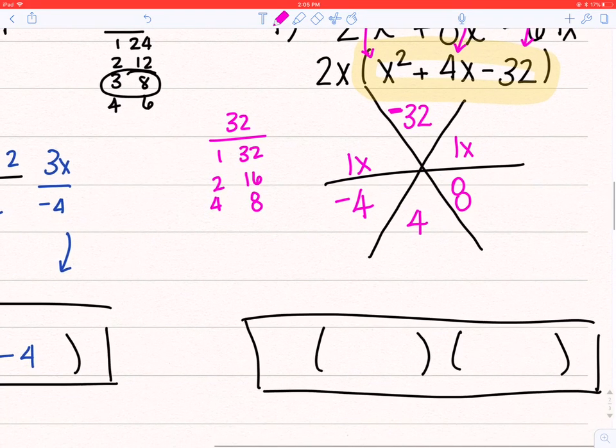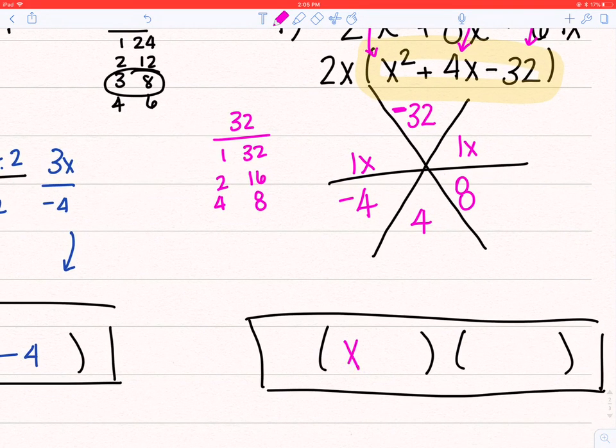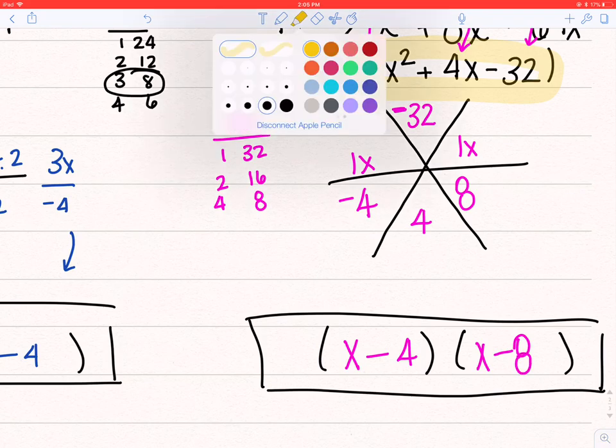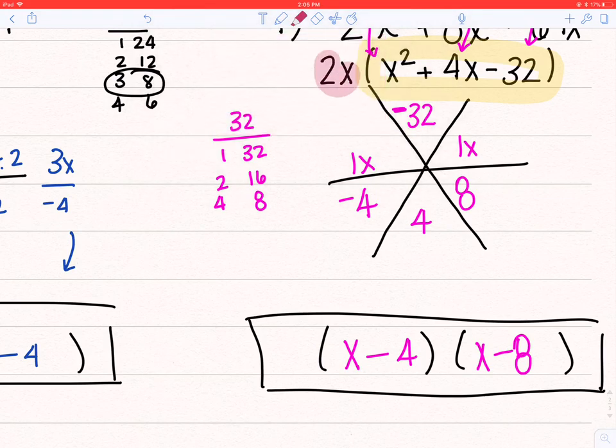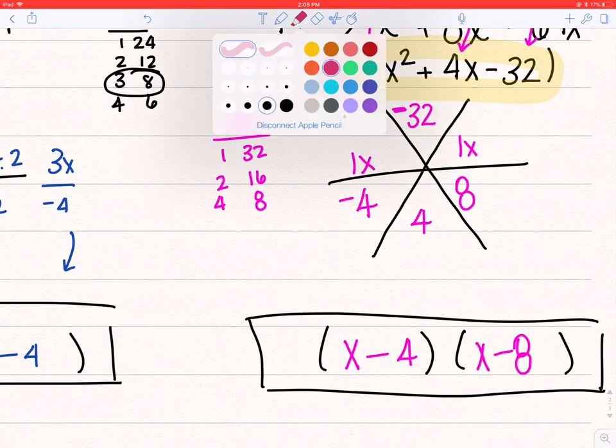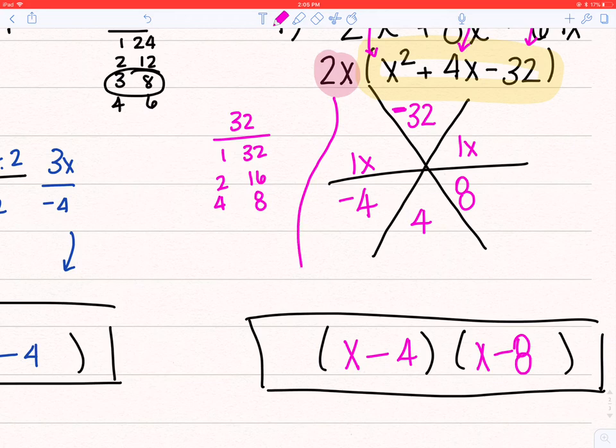1x and negative 4 doesn't reduce, so I have x minus 4. And 1x and 8 doesn't reduce, so I have x plus 8. Now the difference with this one is I have a factor out front, 2x. So that thing is just going to come all the way down and sit in front of my factored form. So my final answer would be 2x times x minus 4 times x plus 8. That thing is completely factored now.